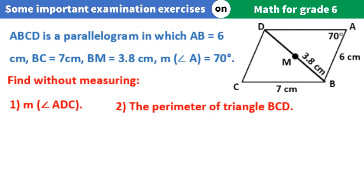A-B-C-D is a parallelogram in which A-B equals 6 cm, B-C equals 7 cm, B-M equals 3.8 cm, and the measure of angle A equals 70 degrees. Find without measuring: 1. The measure of angle ADC. 2. The perimeter of triangle BCD.